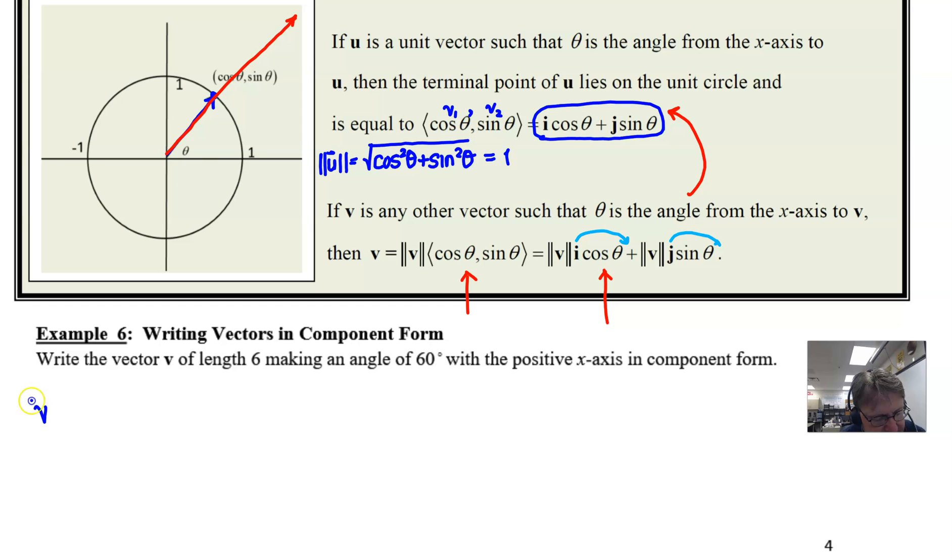So what you're going to do here, say, OK, well, my vector V is defined to be the magnitude of V, which we know is six. It's already computed for us. And then we just multiply that by cosine theta sine theta. Well, remember that theta in this problem is 60 degrees. So what I think I'm going to do is I'm just going to jump right to the IJ form.